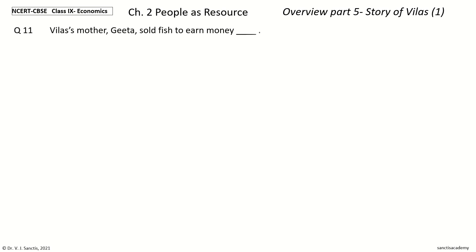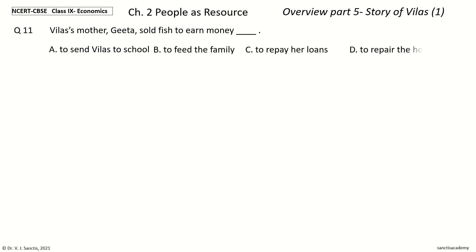Question 11: Vilas's mother Geeta sold fish to earn money dash. The options are: a) To send Vilas to school, b) To feed the family, c) To repay her loans, d) To repair the house. And the answer is To feed the family. So Vilas's mother Geeta sold fish to earn money to feed the family.